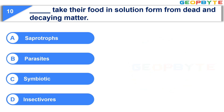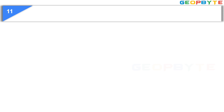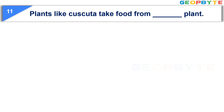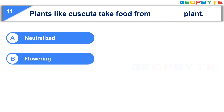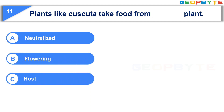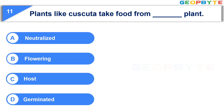Your time is up and the correct answer is Option A, Saprotropes. Now let us see the next question: Plants like Cascata take food from dash plant. Option A: Neutralized. Option B: Flowering. Option C: Host. Option D: Germinated. Your time starts now.